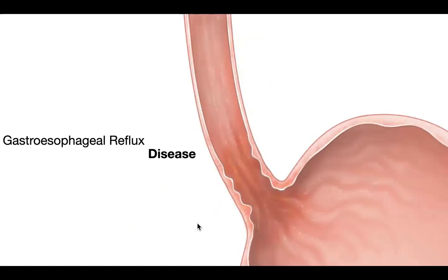The esophageal lining is quite resistant to acid damage, but when the defense mechanism of the esophagus is overtaken by the acid coming up from the stomach, it can result in damage — otherwise, disease. And what type of damage can happen when there is acid reflux?